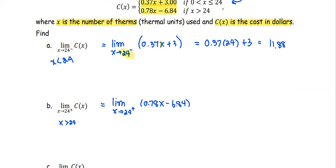Another polynomial function, so we replace x with the value 24. 0.78 times 24 subtracted by 6.84, and we get $12.24.